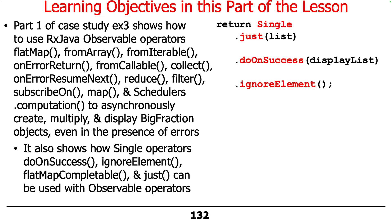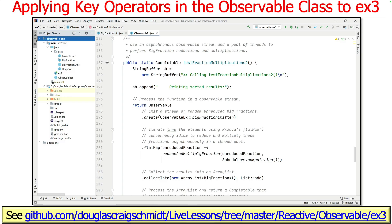It also shows some operators from the Single class, like ignoreElement and flatMapCompletable. We haven't talked a lot about Single here, but we might cover that since we have a few more classes left. This example can be found in the EX3 folder in the reactive Observable folder in my LiveLessons GitHub repository.